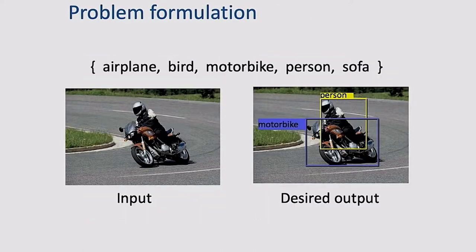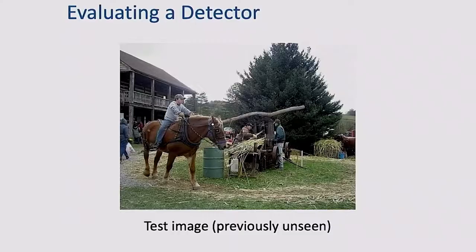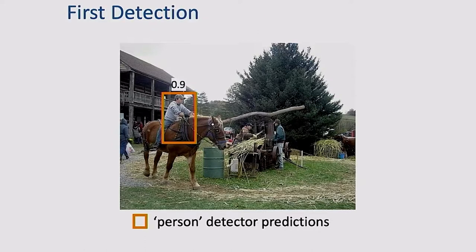The problem formulation is the following. We have a set of predefined categories and given an input image, the desired output is the location of the object and the object categories. Before I talk about how to perform object detection, let's talk about how we actually evaluate the performance of an object detector. Given a test image, previously unseen, we can run a person detector and it might output a bounding box with some confidence score.